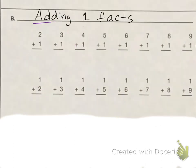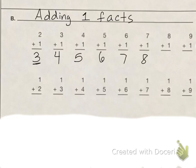Now we're going to work on the adding one facts. When we add one to a number, the answer is the next number we say when we count. For example, if I have two plus one, my answer is three. And if we count, we go one, two, three, four, five. So when we add one, we go to our next number that we count. Three plus one is four, four plus one is five, five plus one is six, six plus one is seven, seven plus one is eight, eight plus one is nine, and nine plus one is ten.